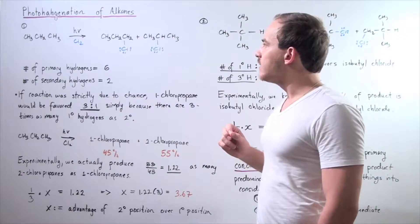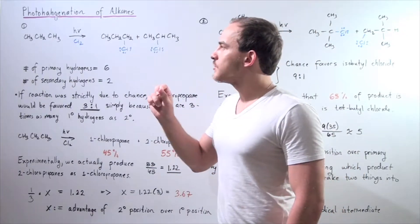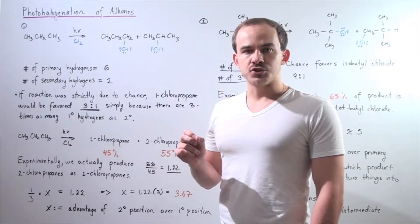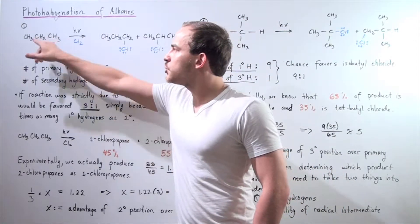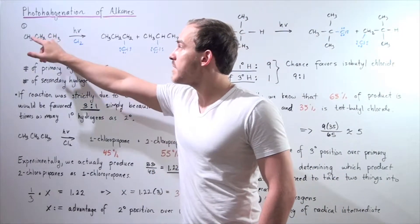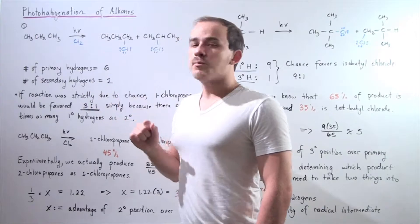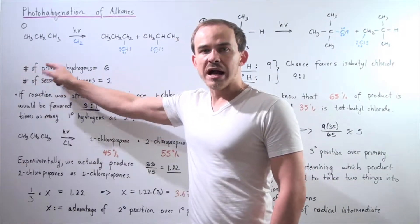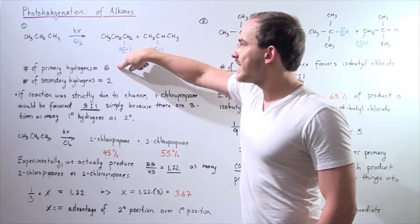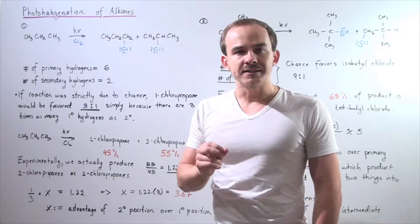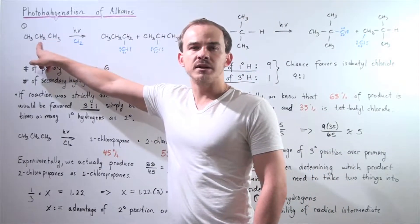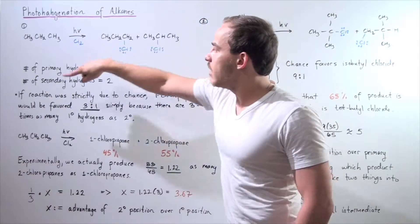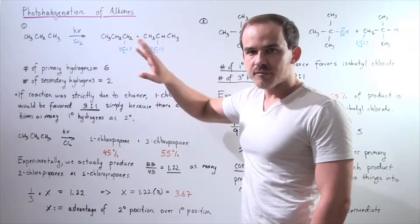Well to begin our analysis, let's compare and contrast the number of primary H's to the number of secondary H's. So notice that in propane we have two primary H's, or two primary carbons, and one secondary carbon. So that means we have the number of primary H's, three plus three is six. And the number of secondary H's, since we only have one secondary carbon, we have two H's attached to that carbon. So that means the number of secondary H's is two.